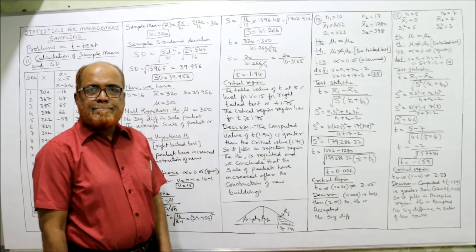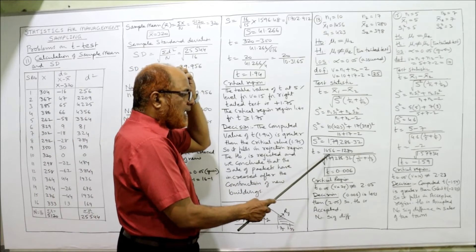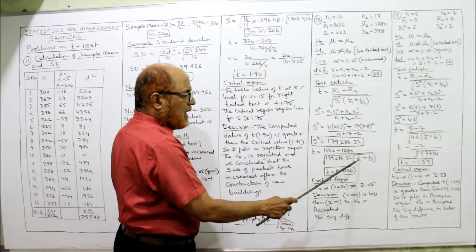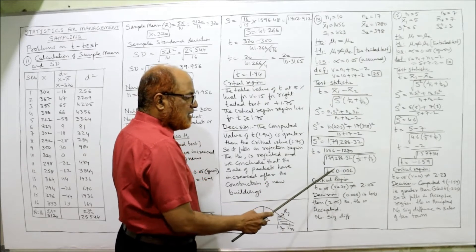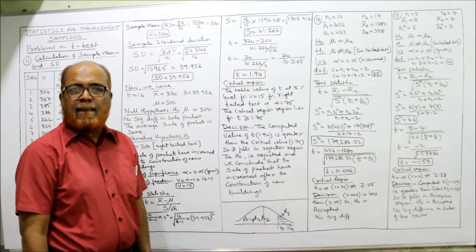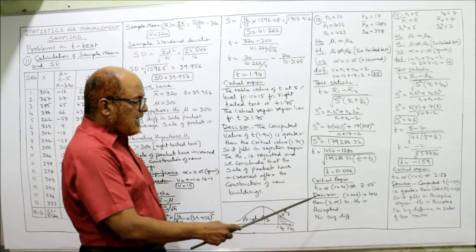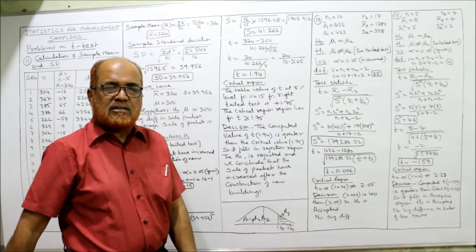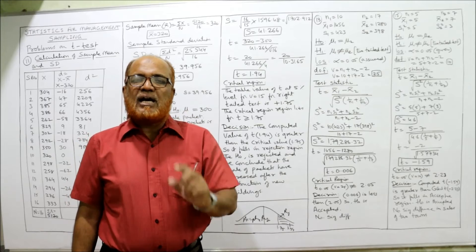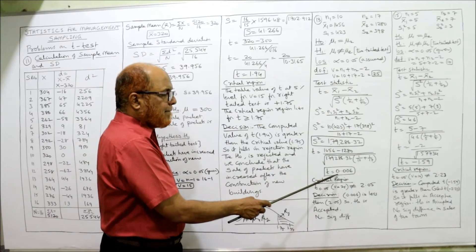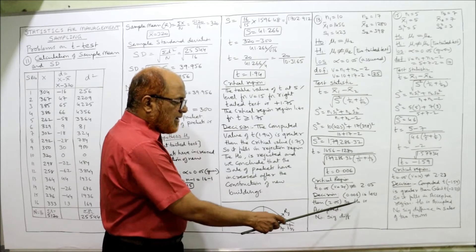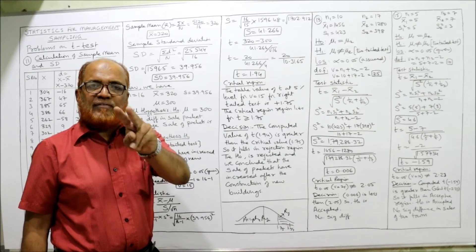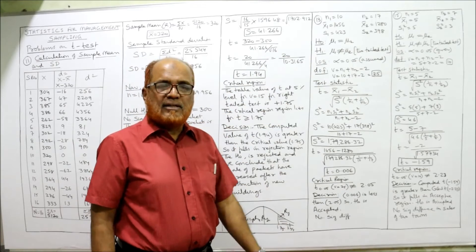Now t equals (X-bar₁ − X-bar₂) divided by s times the square root of (1/N1 + 1/N2): that is (1456 − 1280) divided by the square root of 179,286.32 × (1/10 + 1/17), giving computed t = 0.006. The critical value of t at 0.05 for v = 25 degrees of freedom for a two-tailed test is 2.05. Since computed t (0.006) is less than critical value (2.05), H₀ is accepted — no significant difference in the average life of bulbs of the two batches. This is Problem 13.